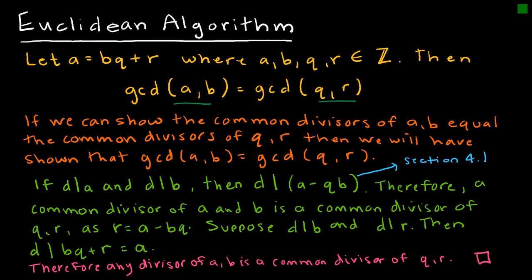So then to go about proving it, I'm saying if D divides A and D divides B, so D is a divisor for both A and B, then D also divides the quantity of A minus QB. Now, I didn't provide a proof for that, but in section 4.1, we did go through that.